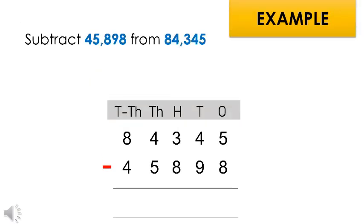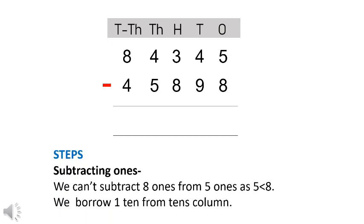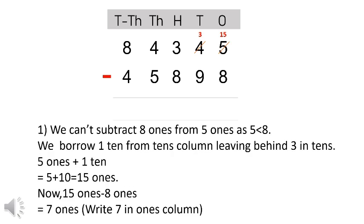Let us subtract 45,898 from 84,345. Arrange the digits according to the place value chart in columns. In the ones column, five is less than eight, so five needs to borrow from its higher place value — the tens column. After borrowing, three will be left in the tens column. Moving back to the ones column, five ones plus one ten equals fifteen ones.